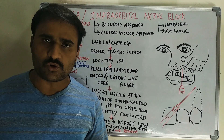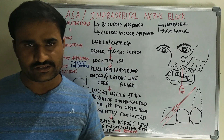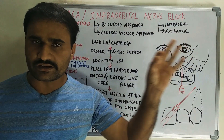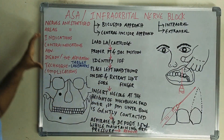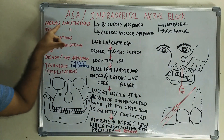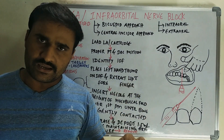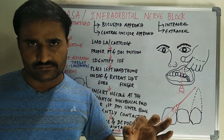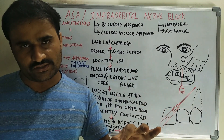In this video we will discuss about the anterior superior alveolar nerve block, also called the infraorbital nerve block. It can be asked as a short answer question. The nerves anaesthetized include ASA, MSA, and the infraorbital terminal nerve branches.